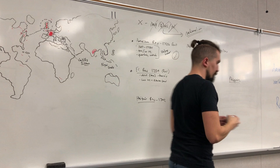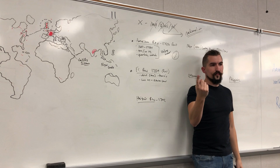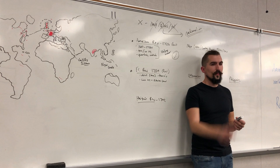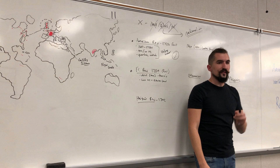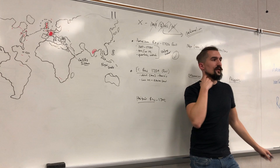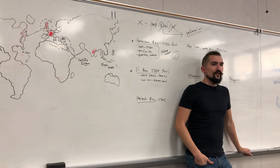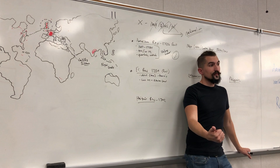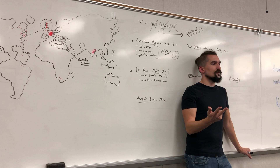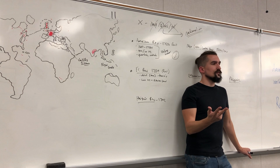The Estates General had three parts: clergy, nobles, and regular people — the first, second, and third estates. Voting seemed fair but wasn't, because the third estate had far more people yet equal weight. When they asked for reforms — implementing a constitution on the king, voting reform within the Estates General, and other rights — the first and second estates and the king said no.